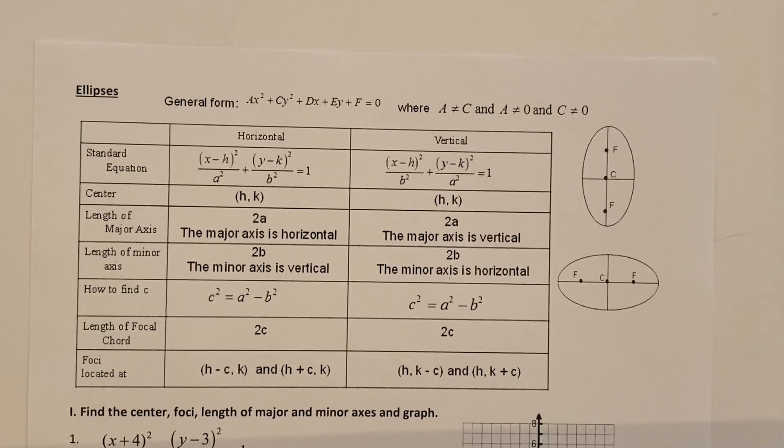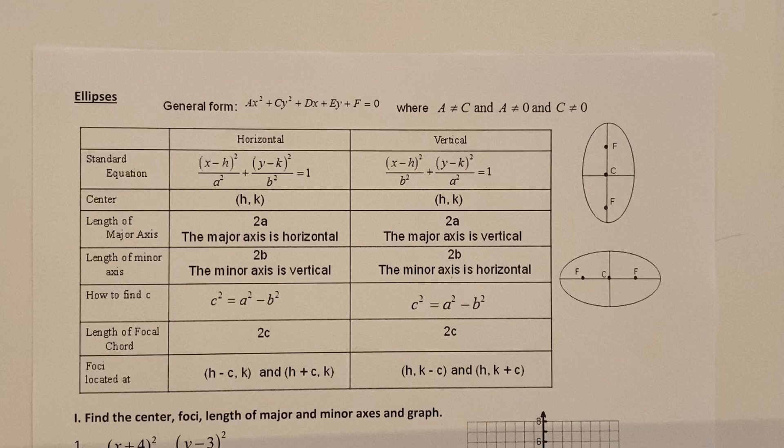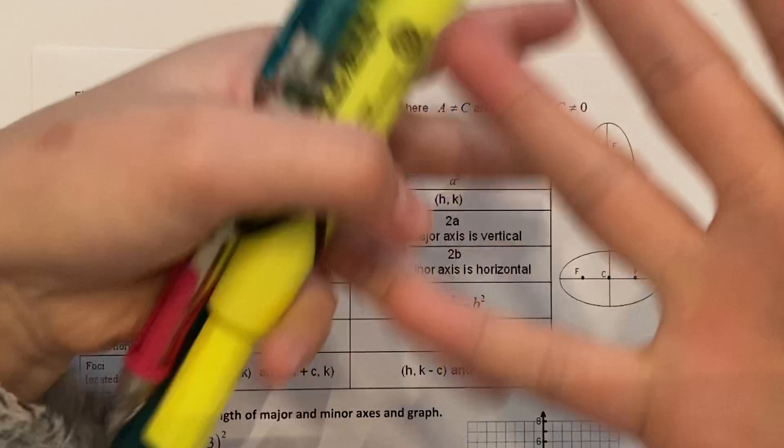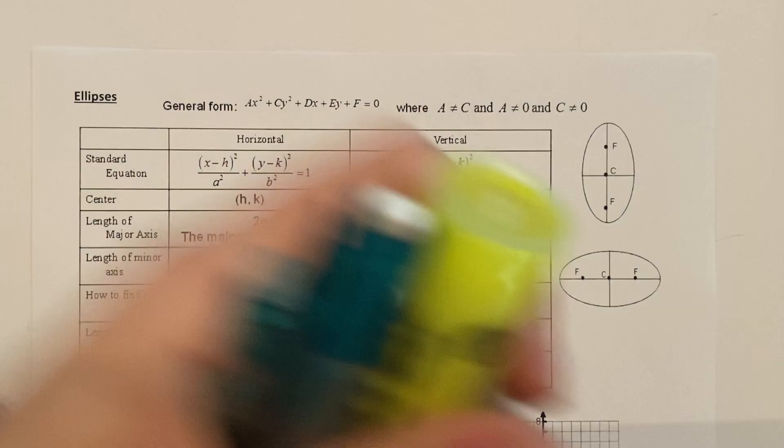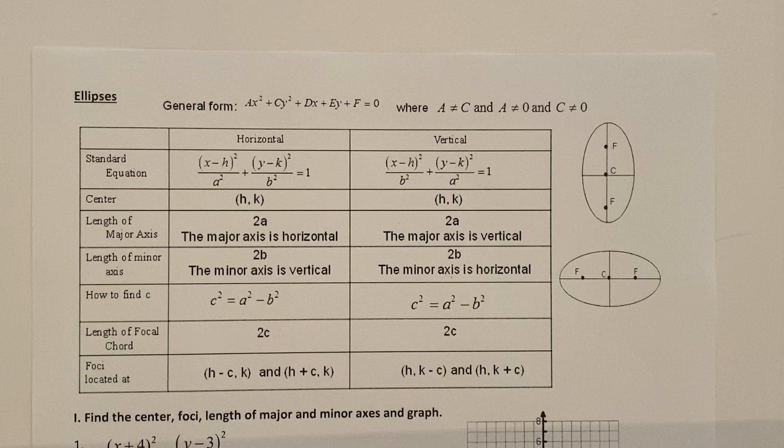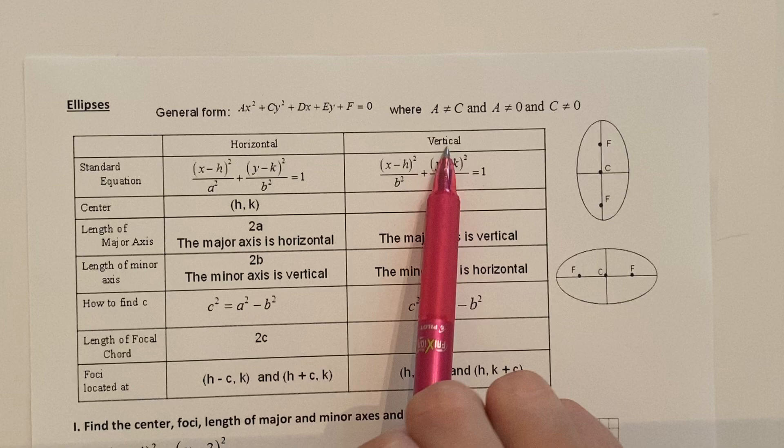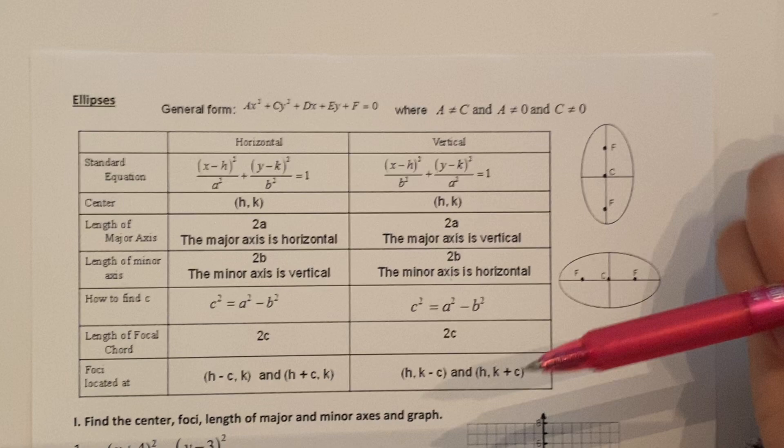In today's video we're going to talk about the ellipse. Now again, we don't say oval, we say ellipse. So first let's start off with talking about how there are two types of ellipses: the horizontal and the vertical. Here's the vertical, here's the horizontal. So it's just which way is it stretched vertically or horizontally.